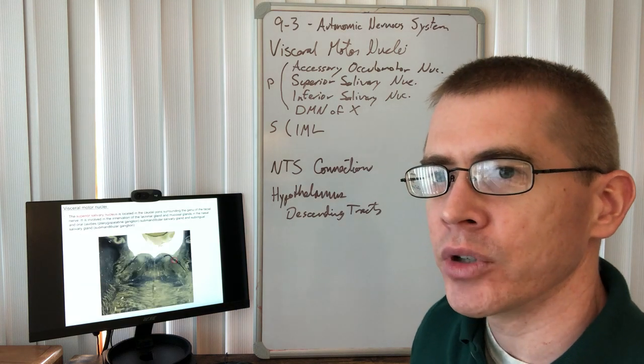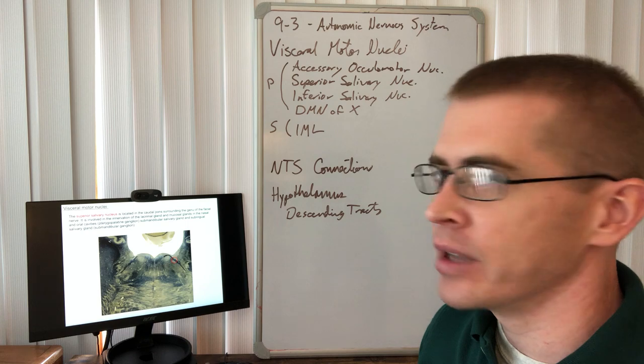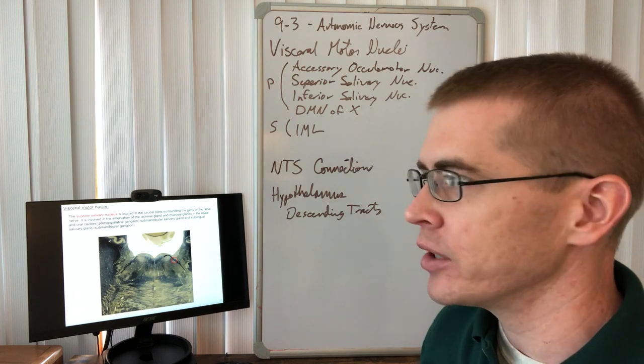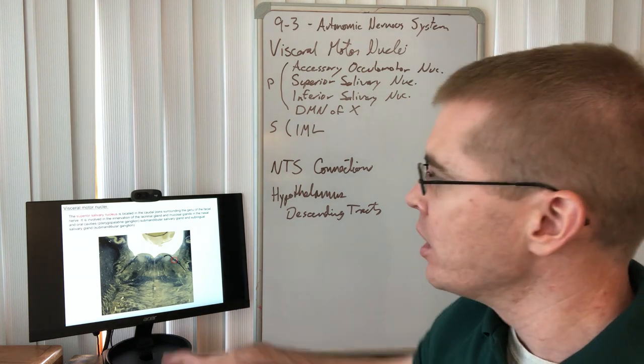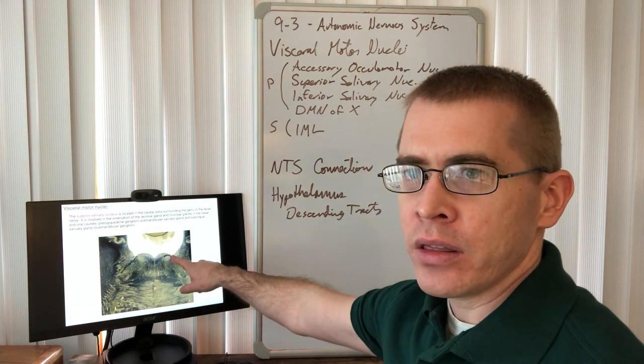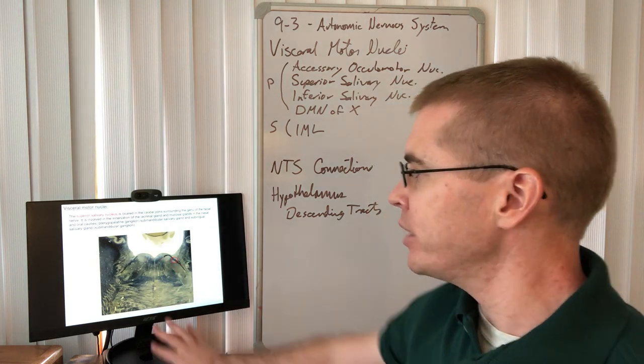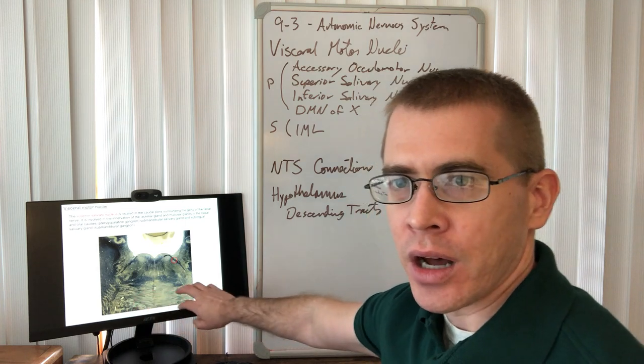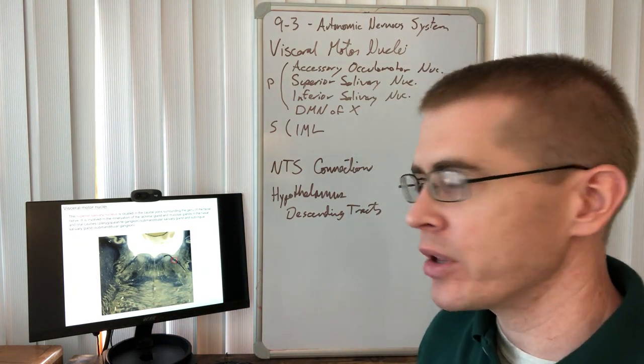If we move farther down into the pons, now we'll see the superior salivary nucleus, named because it is more superior than the inferior salivary nucleus. Superior salivary nucleus is located here within the facial tract of the facial nerve, facial nucleus right behind it. We can see the crossing fibers of the pons that form the middle cerebellar peduncles there.